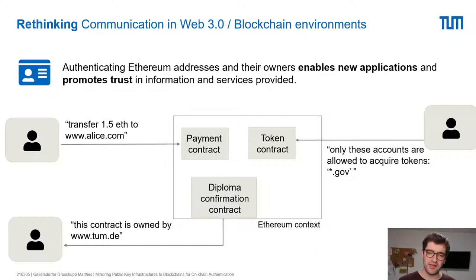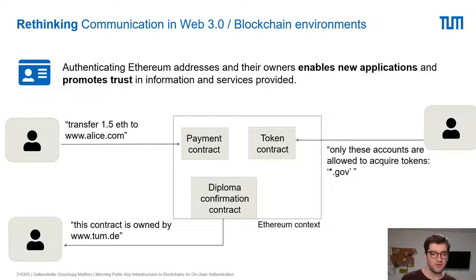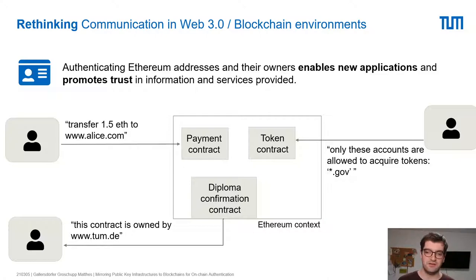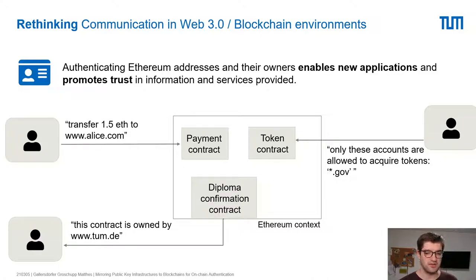We believe that authenticating Ethereum addresses and their owners would allow for new applications and promote trust in the information and services provided on the blockchain. For example, it would be much easier to transfer 1.5 Ether to a domain rather than a weird address. Token contracts could also only allow participation from certain domains, such as .gov, or a contract could be owned by a university like TUM.